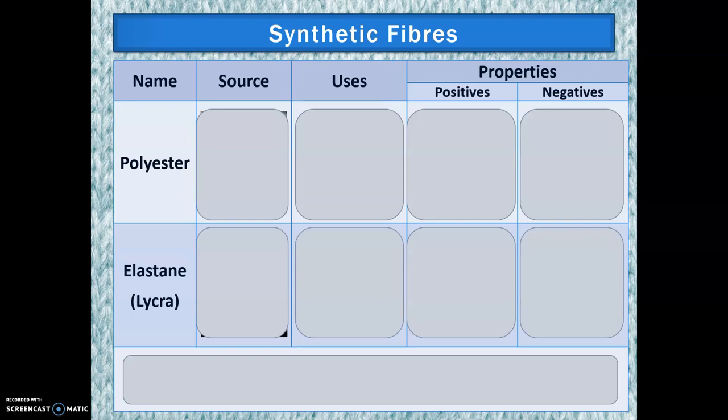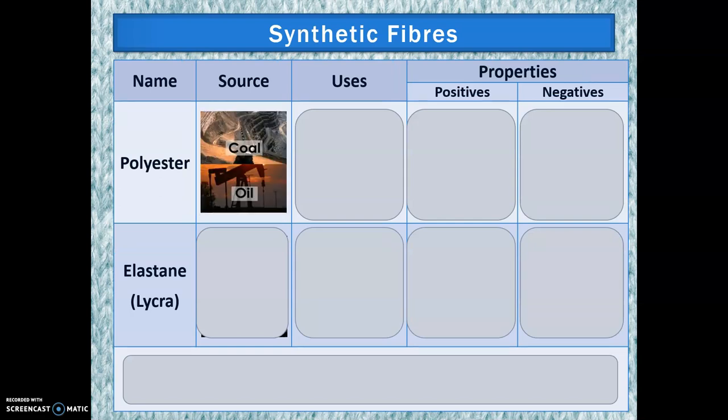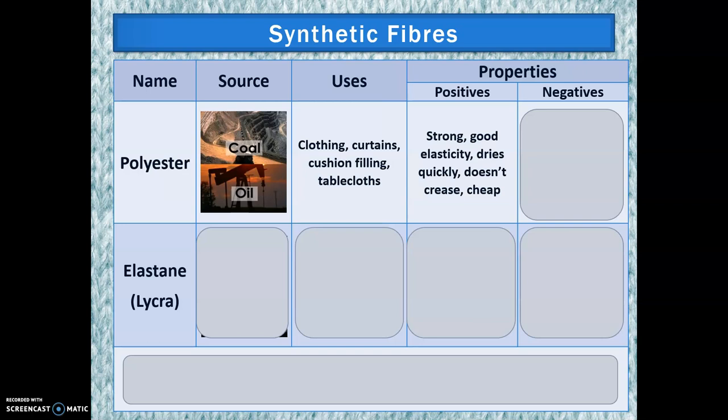Next we have synthetic fibres. The two main ones to know are polyester, which comes from coal and oil. It's used for cheap clothing, curtains, cushion filling and tablecloths. It's pretty strong, has good elasticity, dries quickly, doesn't crease, and is cheap — that's why it's so abundant. However, it's not biodegradable, and therefore not sustainable. It's also very flammable in that it melts. There was a story of a little girl whose witch's costume caught on a candle at Halloween and she was very badly burned, leading to a movement to remove polyester from children's clothing.